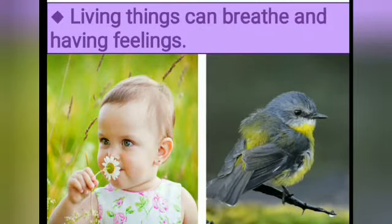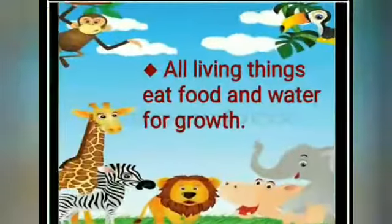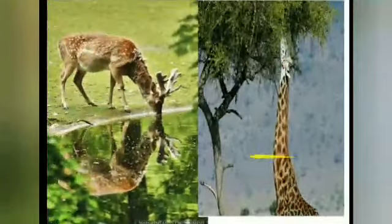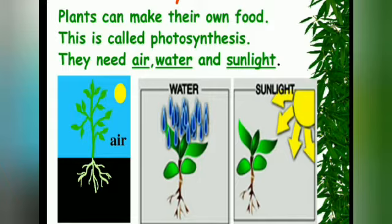Living things can breathe and have feelings. All living things eat food and water for their growth. As like humans and animals, plants can make their own food. For preparing their food, the process is known as photosynthesis. They need air, water, and sunlight for preparing their food.